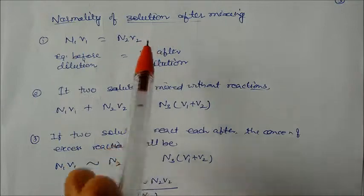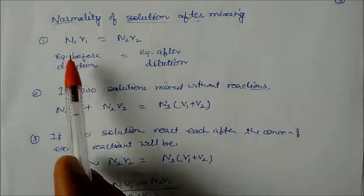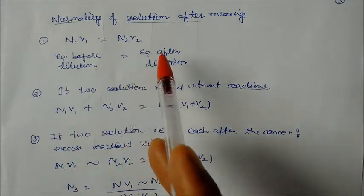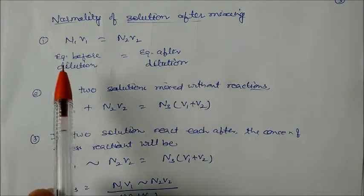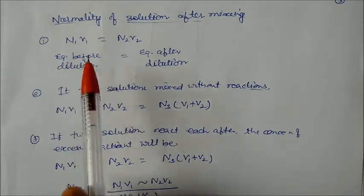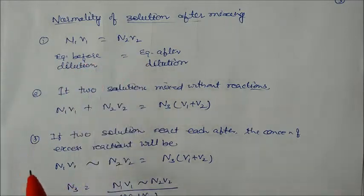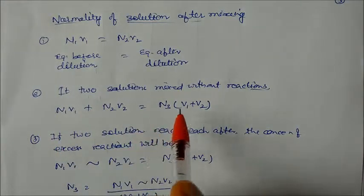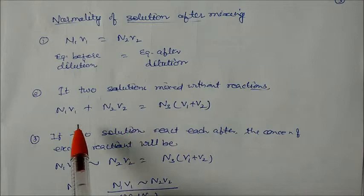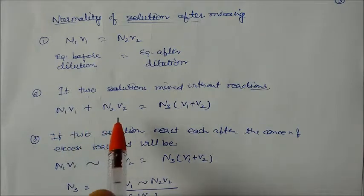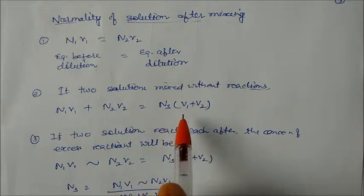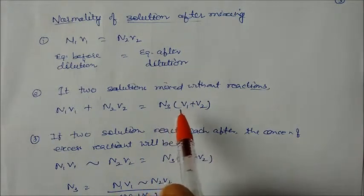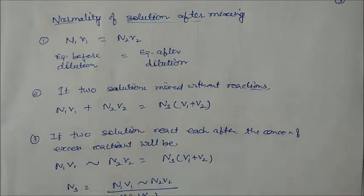Similarly, for normality of solutions: N1V1 = N2V2, meaning equivalents before dilution equal equivalents after dilution. For molarity we use moles; for normality we use equivalents. If two solutions are mixed without reaction: N3 = (N1V1 + N2V2) / (V1 + V2), following the same pattern as molarity.